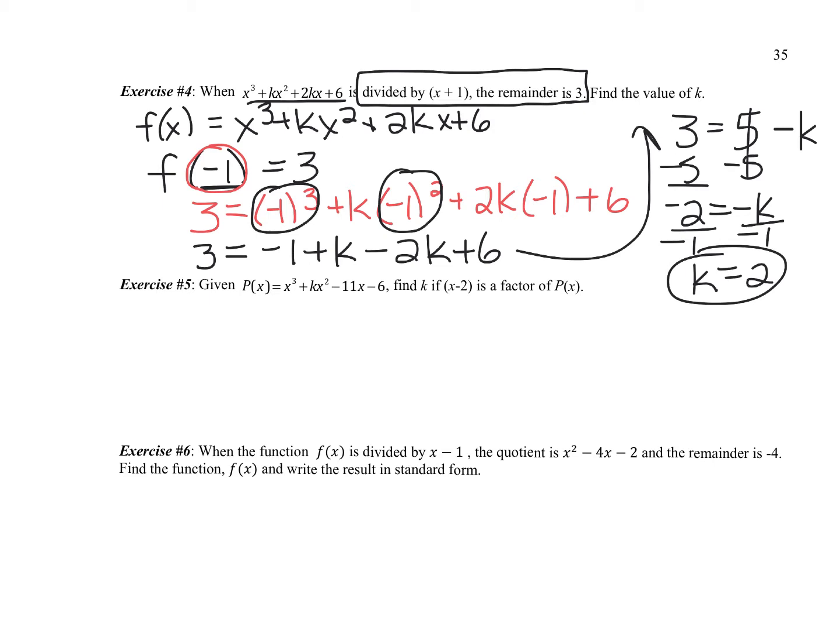Looking at the next one, just a little different. Now we actually have it called a function p of x. It's a little easier to think about that way. We have a k in the function, and it says find k if x minus 2 is a factor of p of x. So if x minus 2 is a factor of p of x, that means p of positive 2 equals 0. If it's a factor, the function's value at the opposite sign is 0.